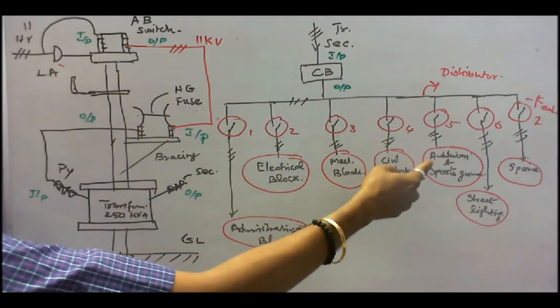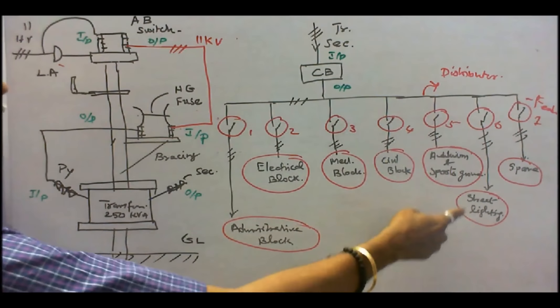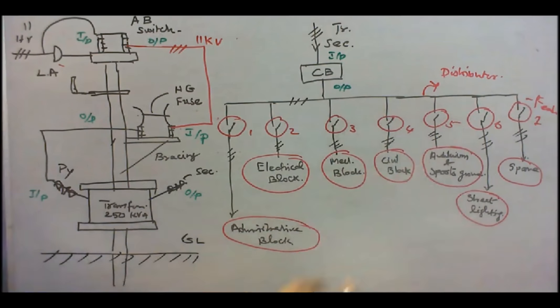Feeder 5 goes to the auditorium and sports ground. Feeder 6 goes to the street lighting. Feeder 7 goes to the spare. Now, we will see the control board structure.